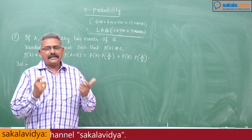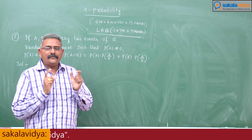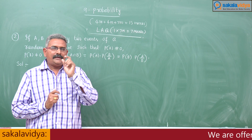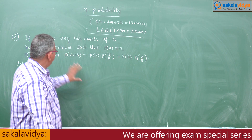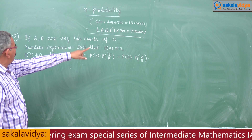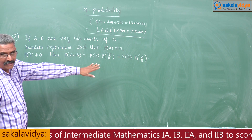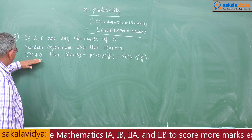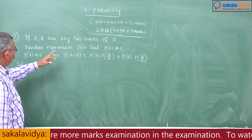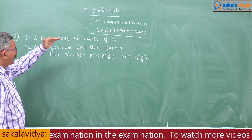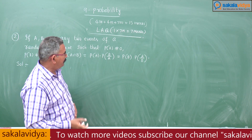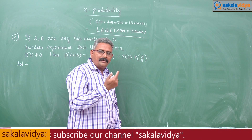This question may be asked in the examination: state and prove Multiplication Theorem on Probability. If you are asked that question, first write down the statement. Statement: A, B are any two events of a random experiment such that P of A does not equal to 0, P of B does not equal to 0. Then P of A intersection B is equal to P of A into P of B conditioned on A, which equals P of B into P of A conditioned on B.